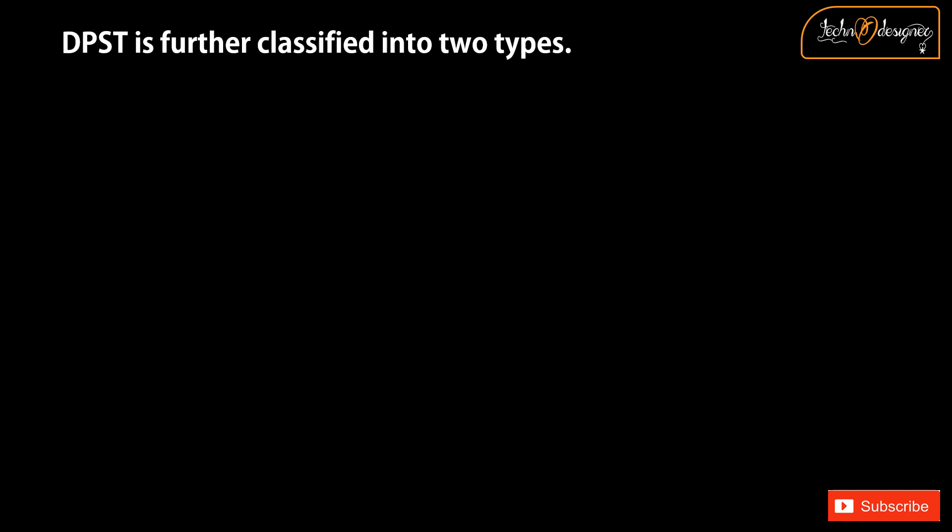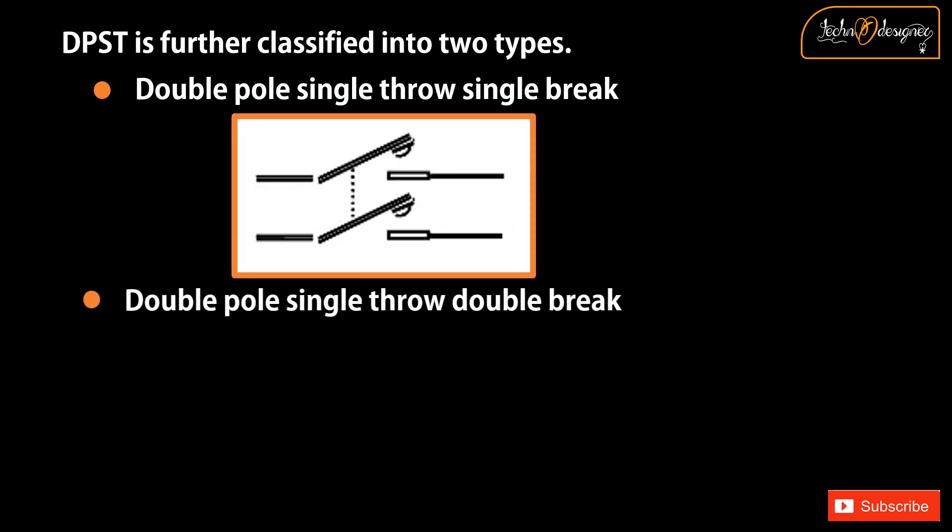DPST is further classified into two types: Double pole single throw single break, and Double pole single throw double break.